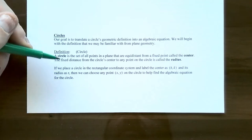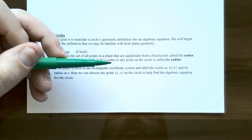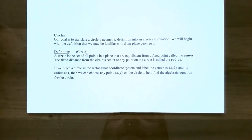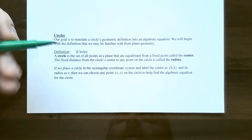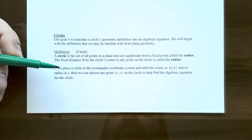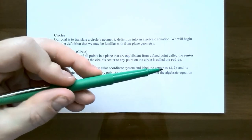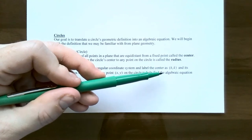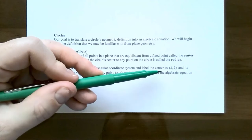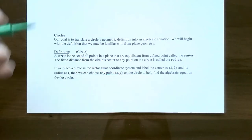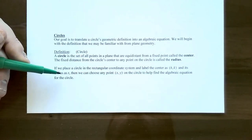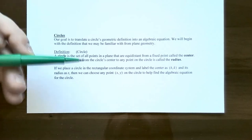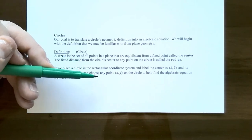The fixed distance from the circle's center to any point on the circle is called the radius, represented with a lowercase r. If we place a circle in the rectangular coordinate system, we label the center as the ordered pair h, k. The center h, k is not part of the circle — it's just the center. The radius is represented with a lowercase r.